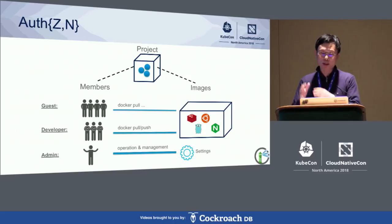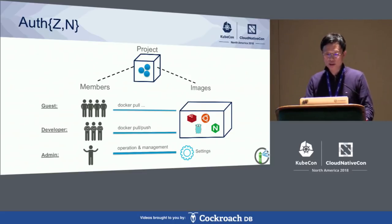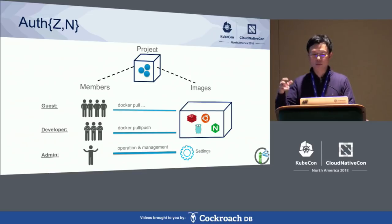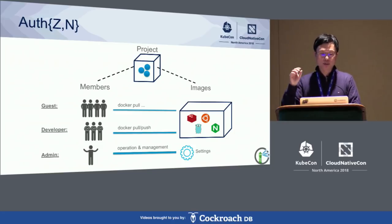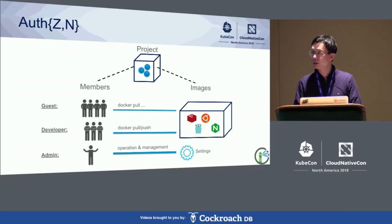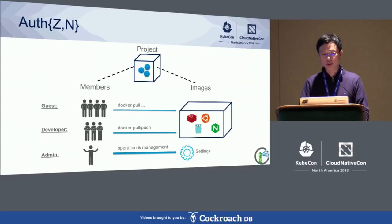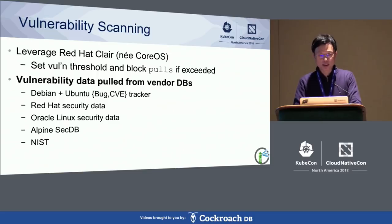The next scenario is authorization and authentication. Most enterprises need access control to authorize who can access what. In Harbor, images are grouped into projects, and to access a project you must be a member of it. Members have roles under role-based access control: a guest role can only pull images, a developer role can pull and push, and an administrator role can do everything the developer can plus manage members and their roles. This allows enterprises to easily control who has access to which image registry.